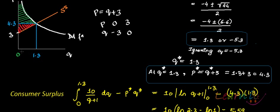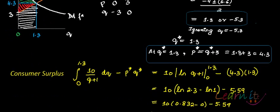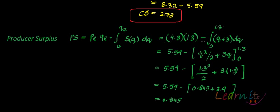To find producer surplus, you take the area of the rectangle P*×Q* and subtract the area beneath the supply function from 0 to 1.3. That red area is your producer surplus. So: PS = P*Q* − integral from 0 to 1.3 of (Q+3) dQ = 5.59 − [Q²/2 + 3Q] from 0 to 1.3 = 5.59 − (0.845 + 3.9) = 0.845.